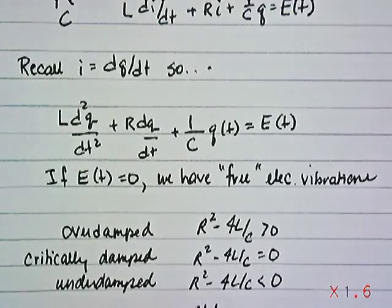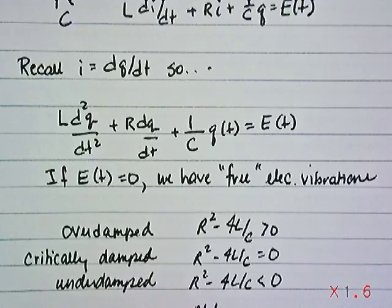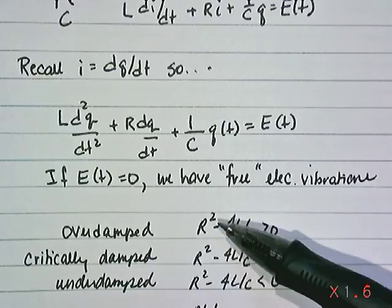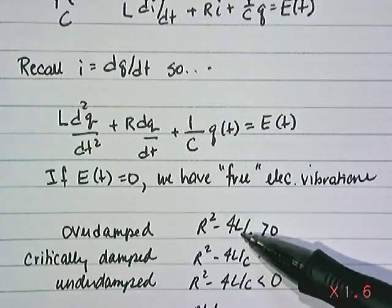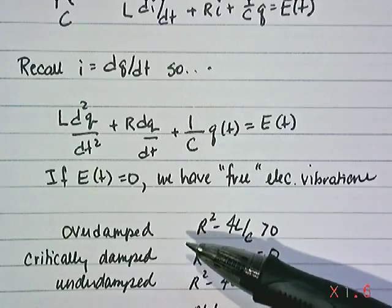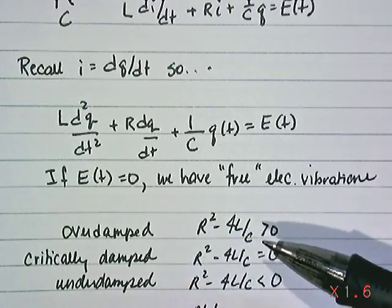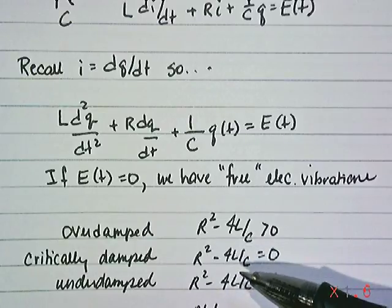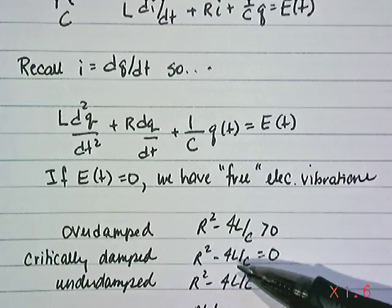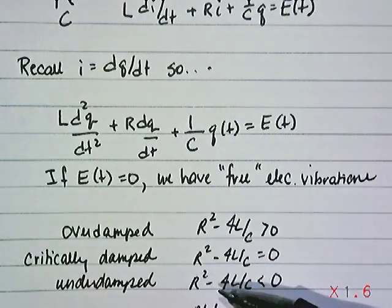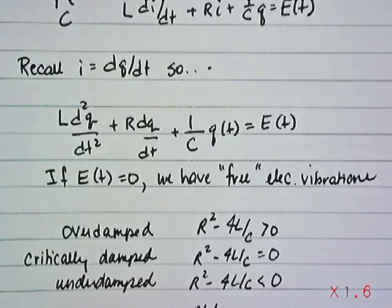critically damped, or underdamped according to these relationships between the resistance and the inductance and capacitance. If R squared minus 4L over C is strictly positive, you have an overdamped electrical vibration system where eventually the charge will go to zero without very much oscillations at all. Critically damped, we already know what that means. In this case, it's R squared minus 4L divided by C. That would have to be equal to zero. And if R squared minus 4L divided by C is less than zero, you have an underdamped electrical vibration system.